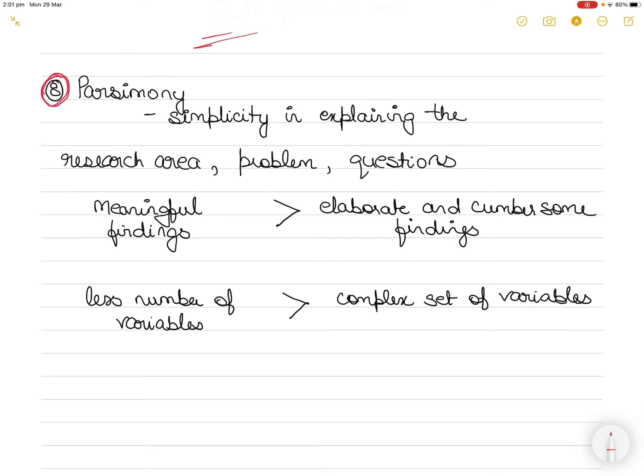The final characteristic of a good research is parsimony. What is parsimony? Parsimony refers to the simplicity in explaining the research area, problem, research questions, phenomena, and in generating the solutions for the problems. Nobody likes complex research.